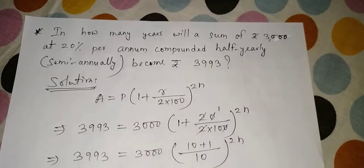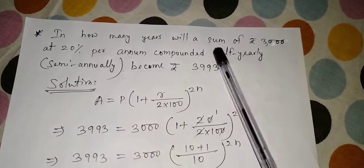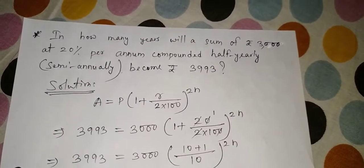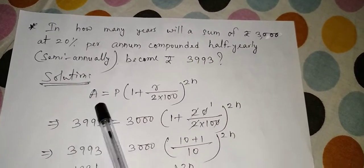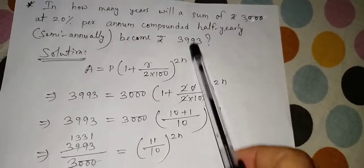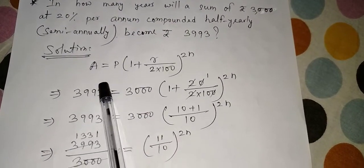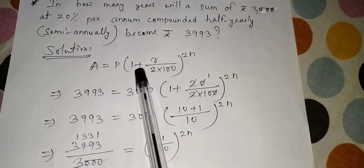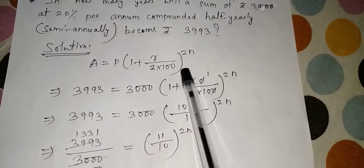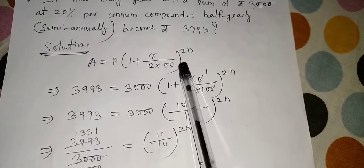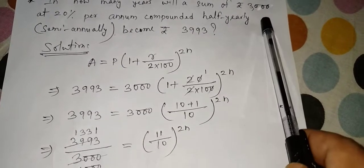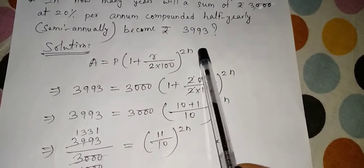3000 became 3993. This is principal, this is amount, but you have to find time. Rate is given, but the question is half-yearly. Half-yearly means the bank pays the interest at the end of 6 months. Half-yearly means after every 6 months. So in such question, half-yearly question, there is a change in the formula. I want to show you the change.